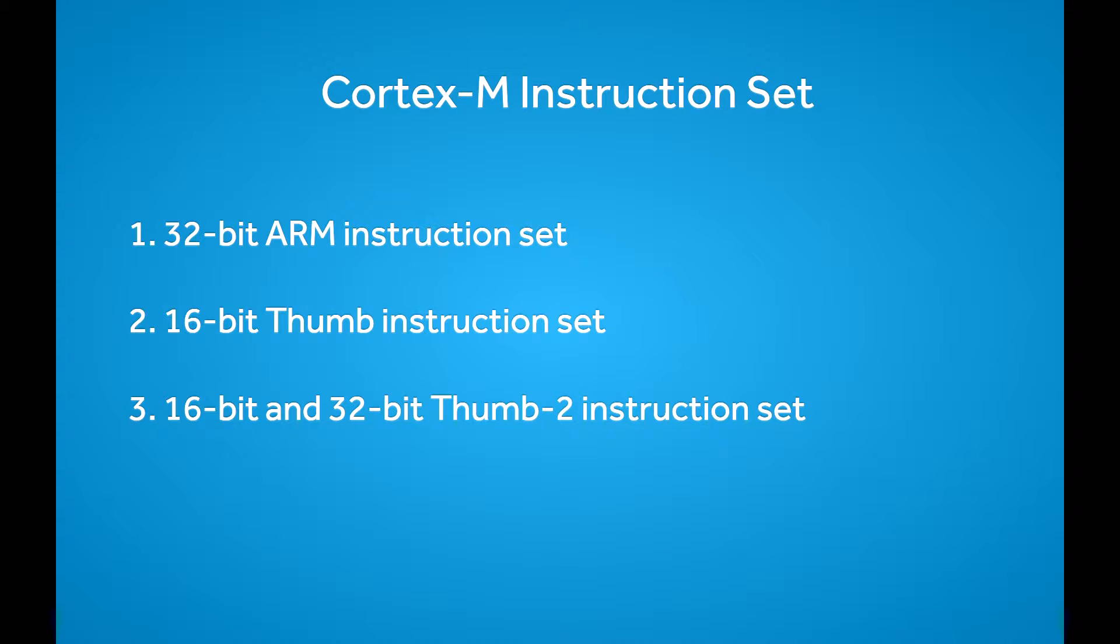This was an issue because memory was and still is expensive, and it also consumed a lot of power. So in 1995, ARM introduced the 16-bit thumb instruction set. At this time, ARM started supporting on their processors both the ARM instruction set and the thumb instruction set.